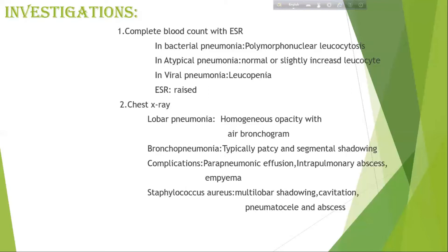Chest X-ray: Lobar pneumonia shows homogeneous opacity with air bronchogram. Bronchopneumonia typically shows patchy and segmental shadowing. Complications visible on X-ray include parapneumonic effusion, intrapulmonary abscess, and empyema. Staphylococcus aureus may show multilobar shadowing, cavitation, pneumatocele, and abscess.